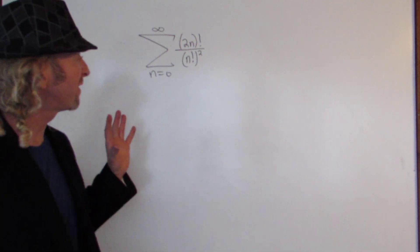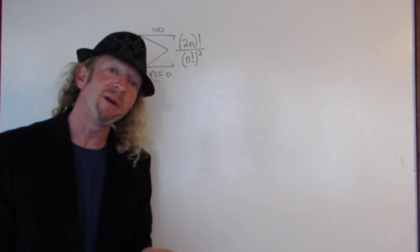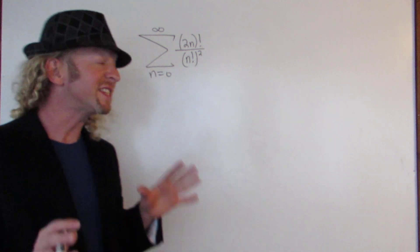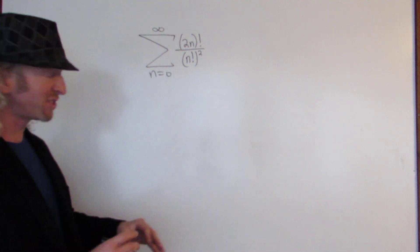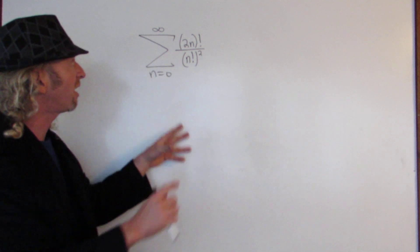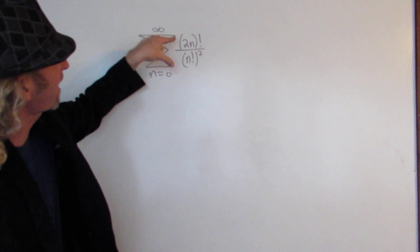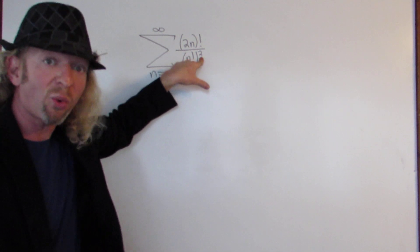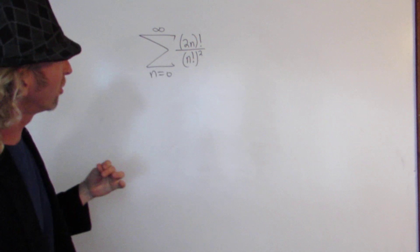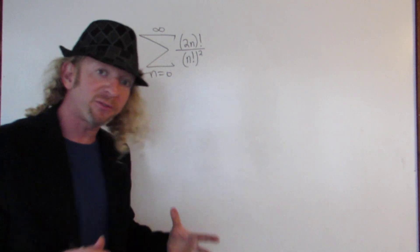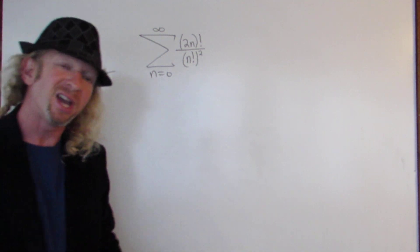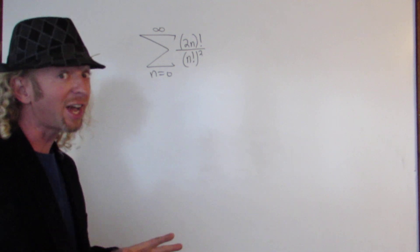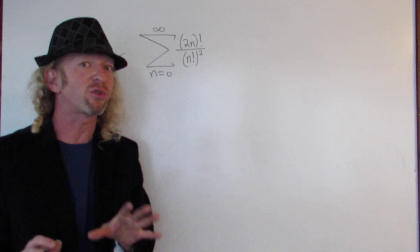Hey, what's up YouTube? In this problem we have an infinite sum, and the question is: does the sum converge or does it diverge? I picked this problem because it has factorials everywhere — a factorial in the numerator and a factorial in the denominator, and not only that, it's being squared. So how do we determine convergence or divergence? Typically, when you have factorials, it's a good idea to try the ratio test.